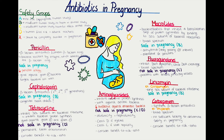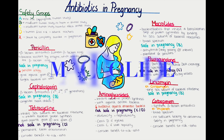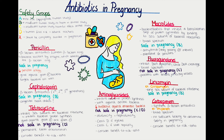Now let's continue with the next class known as macrolides. The macrolides are bacteriostatic antibiotics which act by binding to the 50S subunit of bacterial ribosomes. Thereby they inhibit a translocation step of protein synthesis, and thereby inhibit protein synthesis overall. They are considered broad-spectrum antibiotics and are bacteriostatic, but can also be bactericidal in large doses.